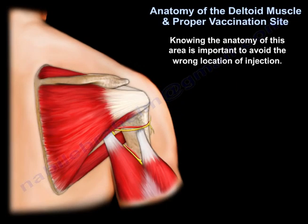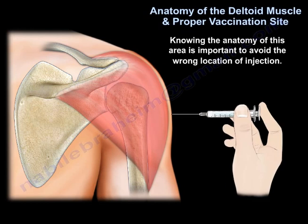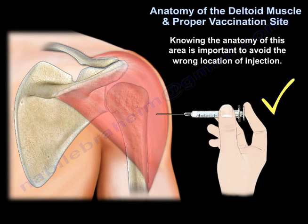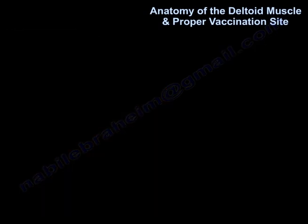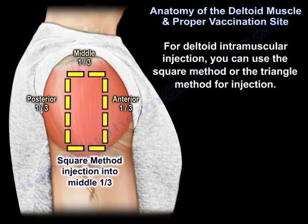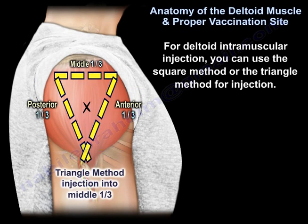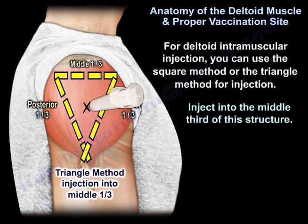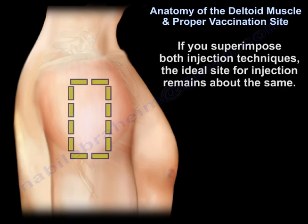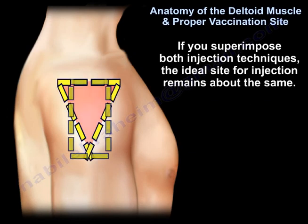Knowing the anatomy of this area is important to avoid wrong location of injection. You can use the square method or the triangular method for injection — inject into the middle third of this structure. If you superimpose both injection techniques, the ideal site for injection remains about the same.